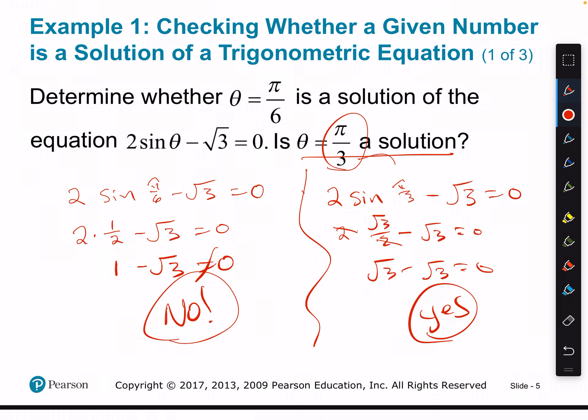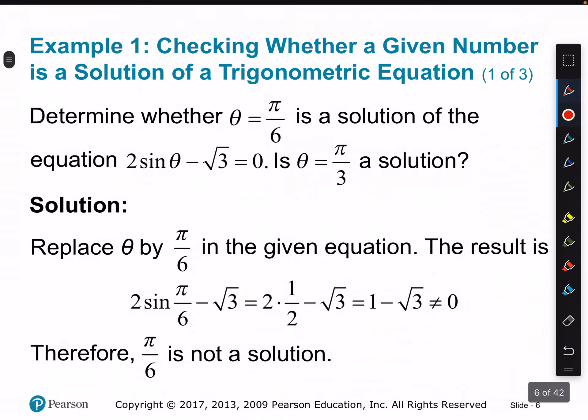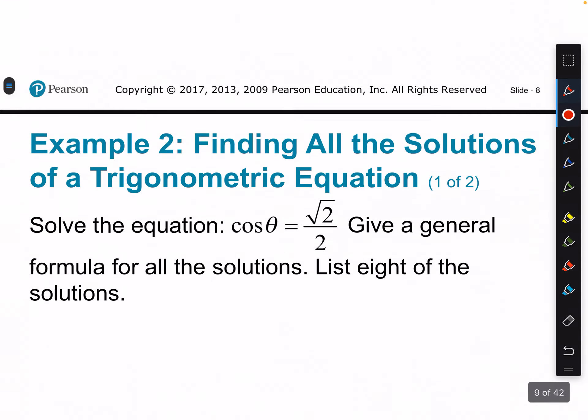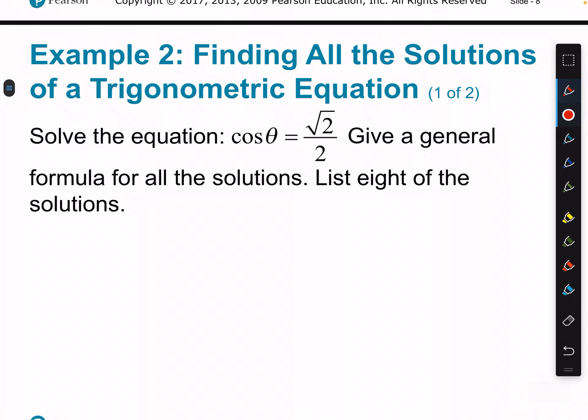You can use your unit circle to check, but try to figure it out before you look. Unless the domain is restricted, we need to find all solutions of a trig equation. Finding all solutions can be accomplished by first finding solutions over an interval whose length equals the period of the function, and then adding multiples of that period. Example 2: solve cosine of theta equals root 2 over 2. Give a general formula for all solutions and list 8 of them.